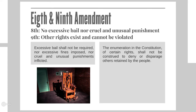The Ninth Amendment says that other rights exist and cannot be violated. This is usually the one that everybody forgets exists in the Constitution. It says basically that you cannot use the Constitution to prove that people do not have any other rights. The rights in the Constitution, like your freedom of religion and right to bear arms, are not the only rights that you have. Just because the Constitution doesn't include a right does not mean it doesn't exist. An example would be the right to education — because you have to go to school, you should have the right to a decent education.